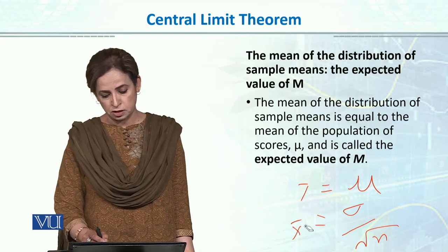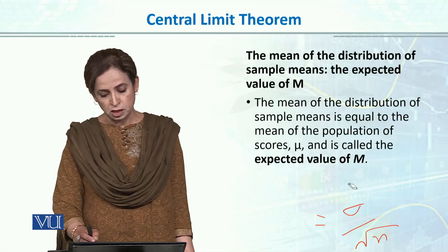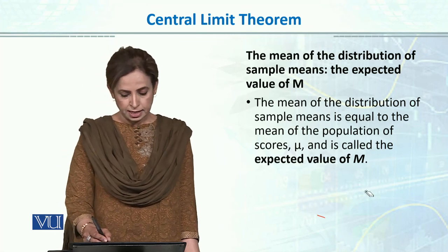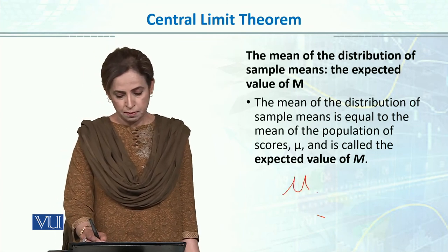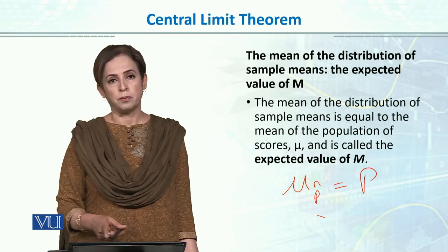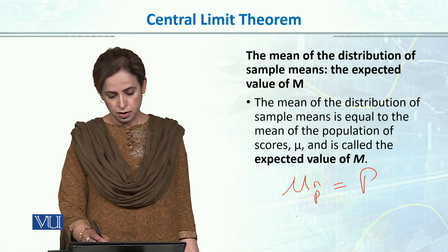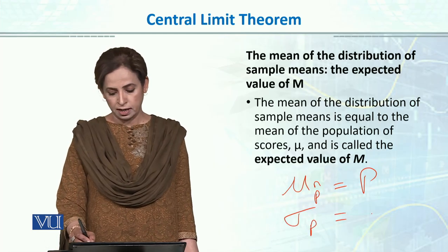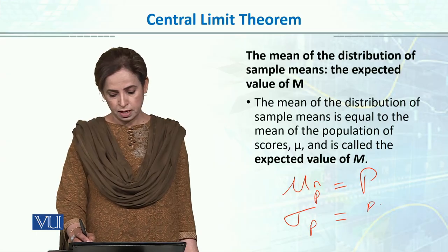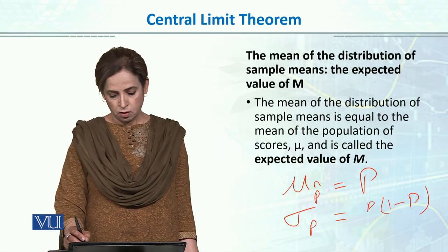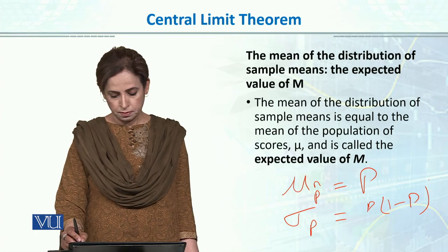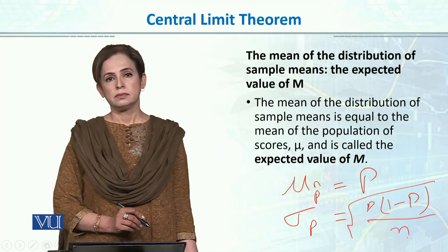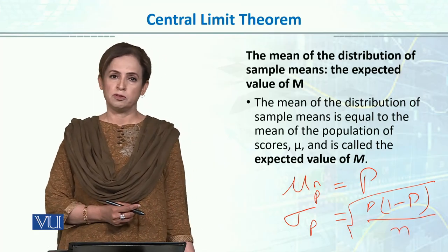Just as we build a sampling distribution of means, we also build sampling distributions of proportions and standard deviations. For the sampling distribution of proportions, the mean of the sampling distribution of proportion equals the population proportion (p), and the standard deviation equals √(p(1−p)/n). We will cover the sampling distribution of proportions shortly.